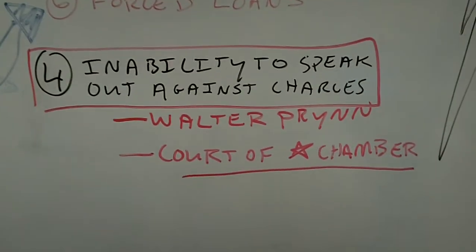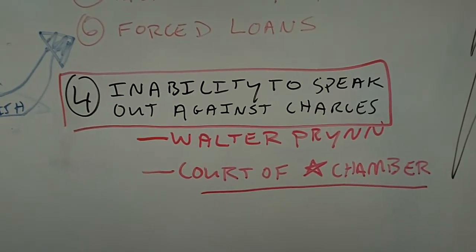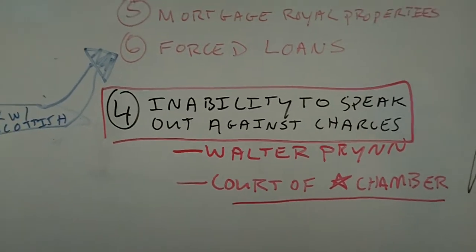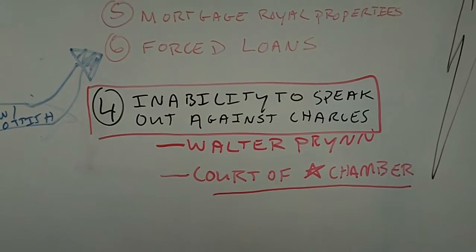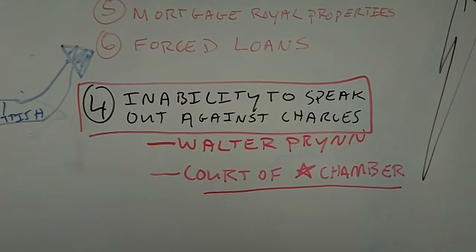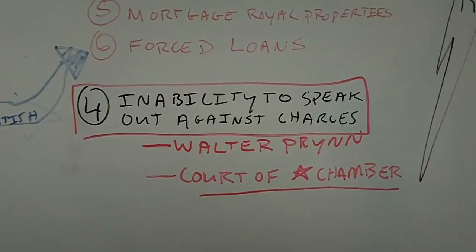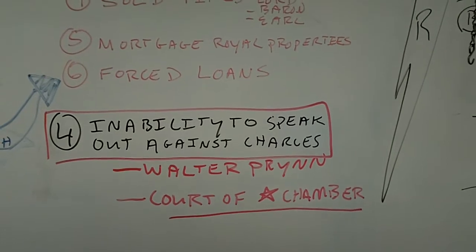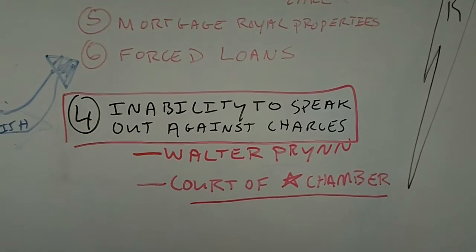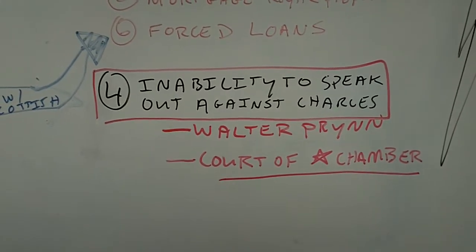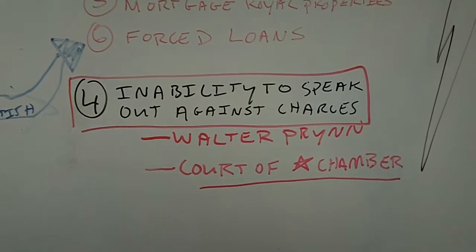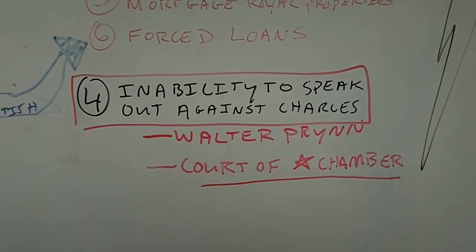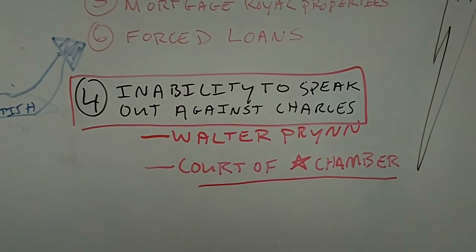A fourth reason that causes the Civil War is the inability of people to speak out against Charles. During this time period, because he was an absolute monarch practicing the Divine Right of Kings, people like Walter Prynne would try to speak out against him and would get charged with something called seditious libel — basically saying spurious things about the King. You would get branded on each cheek with S and L, and get your ears cut off and nailed to a wall in public. He also had something called the Court of Star Chamber, a secret court where you could be tried by the King and have everything taken away. Charles would throw a noble in the Court of Star Chamber, imprison him, and take all of his stuff.